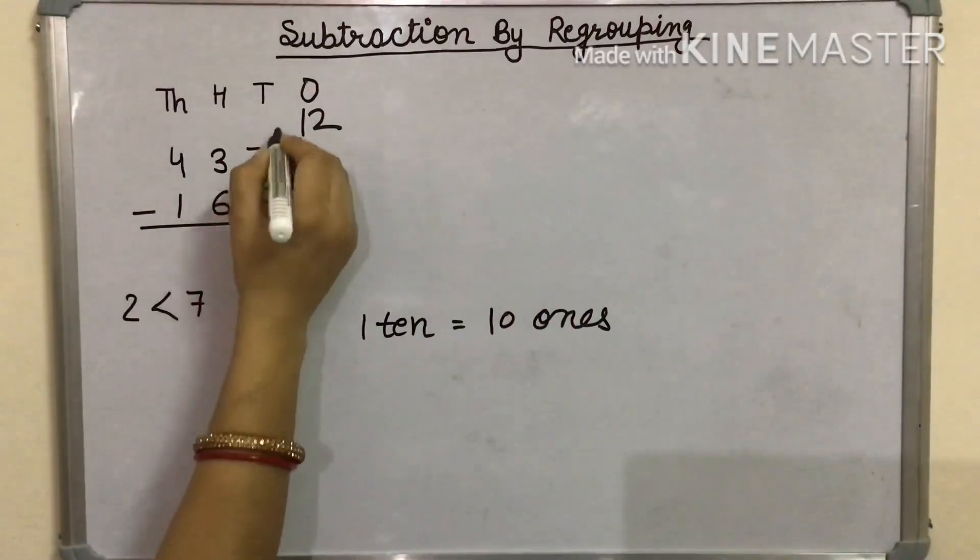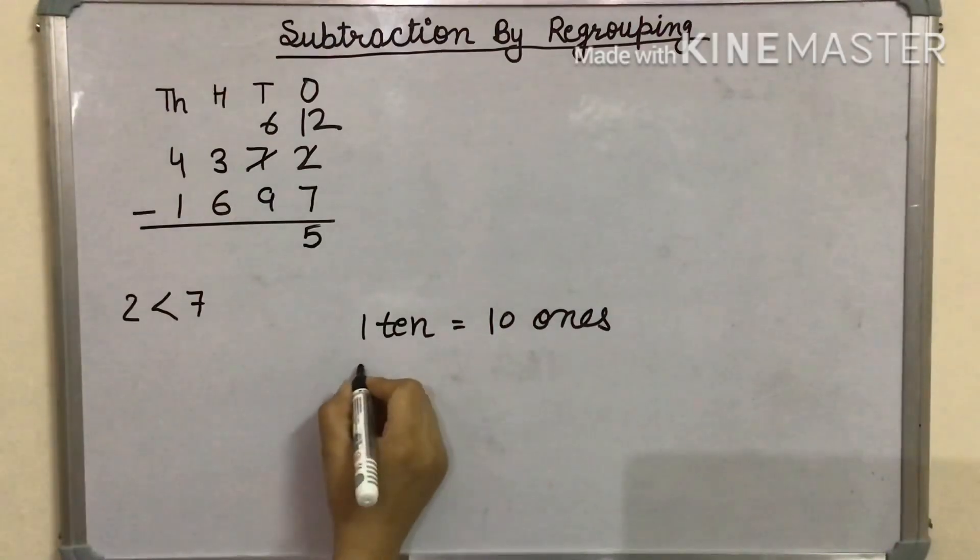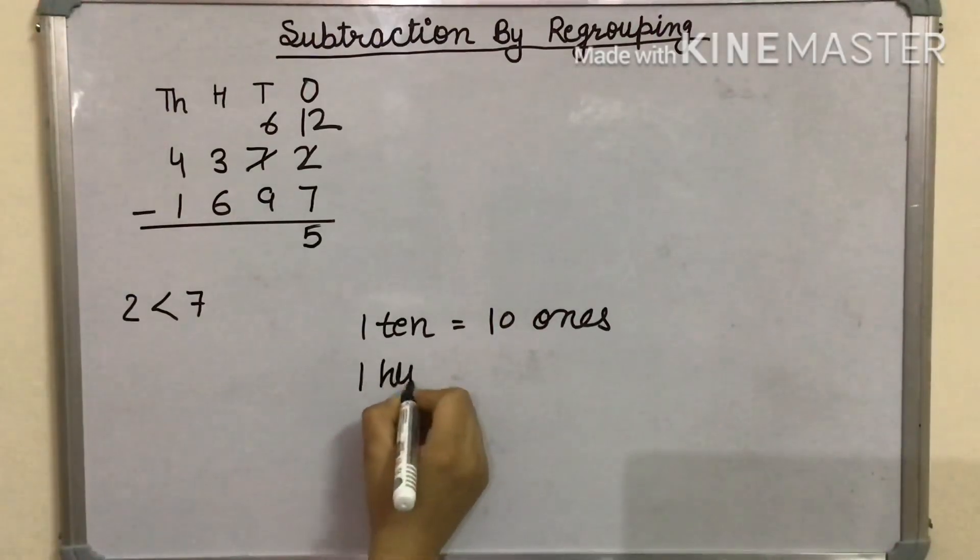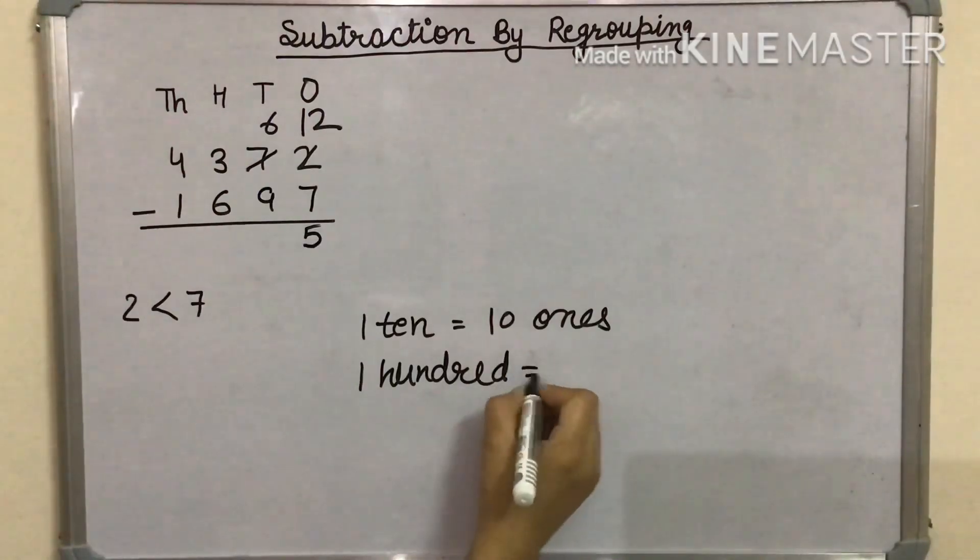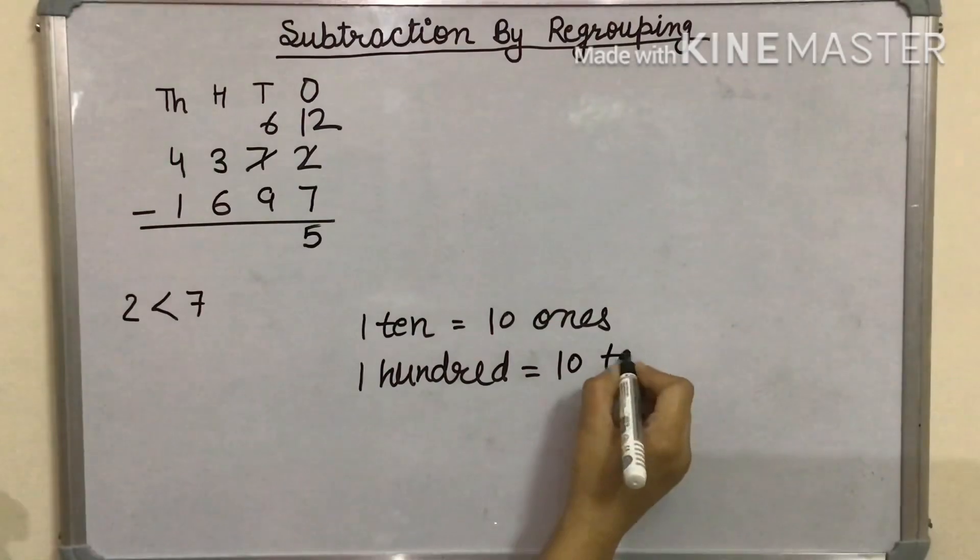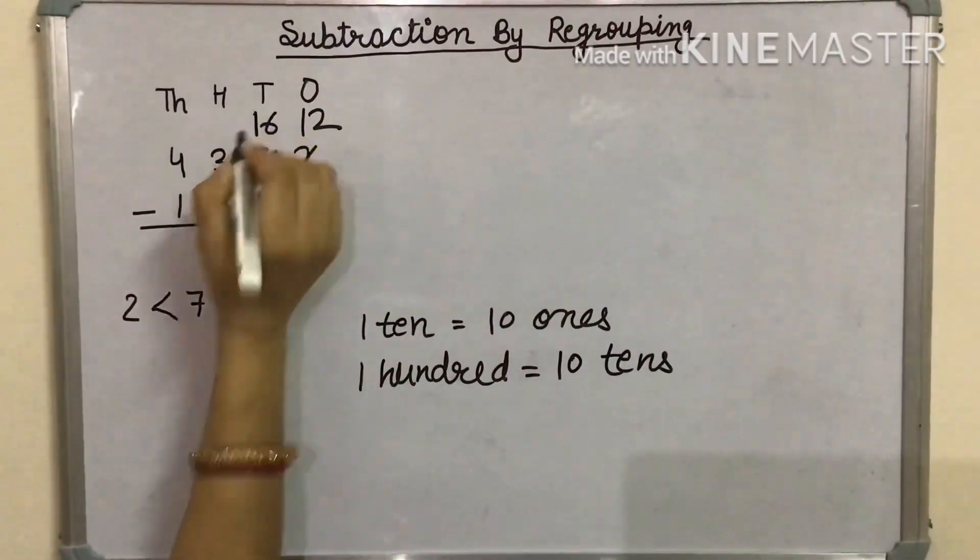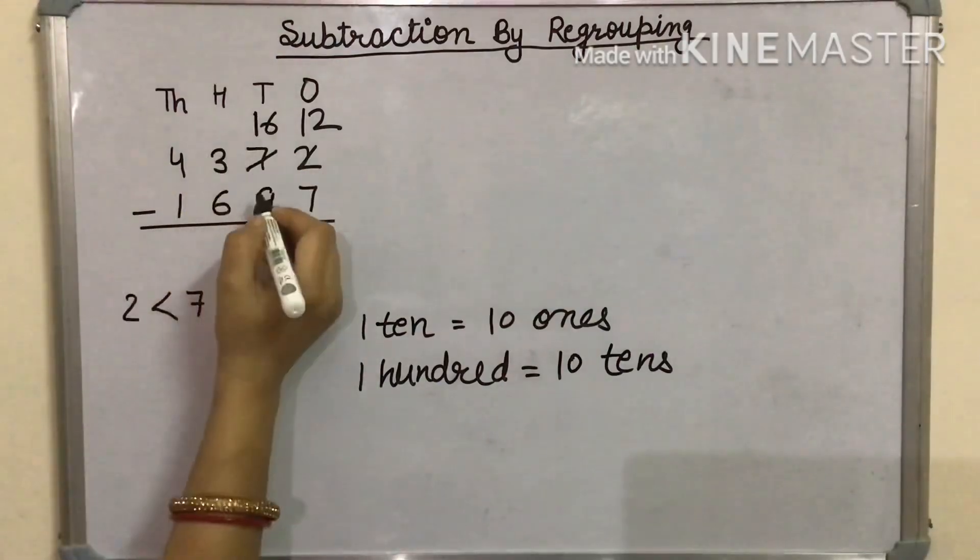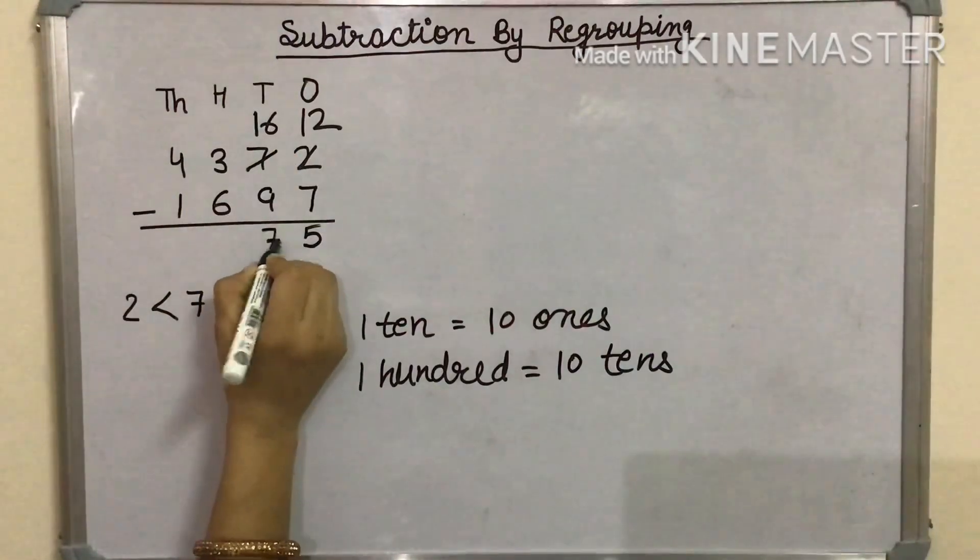The 10s digit will be 6. Now, we borrow 100. 100 is equal to 10 tens. The 10s number will be 16. Now, subtract 9 from 16 and it gives 7.